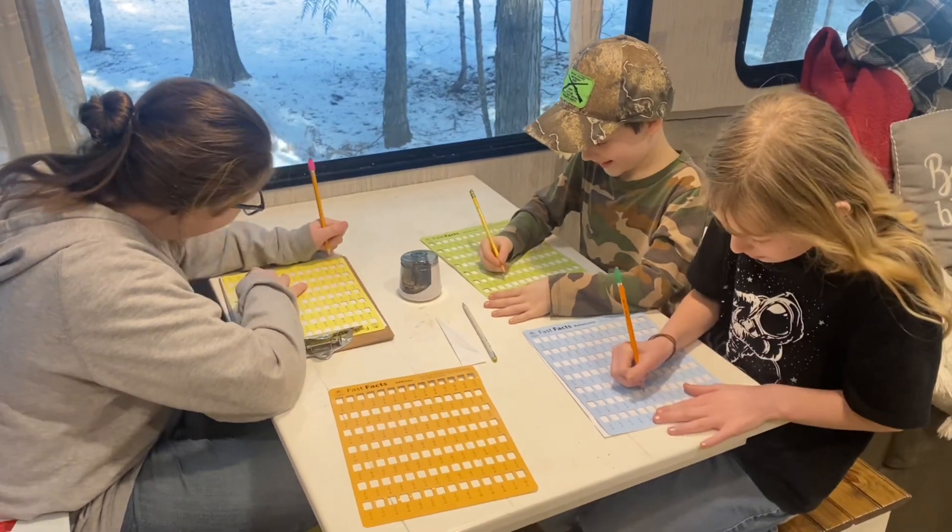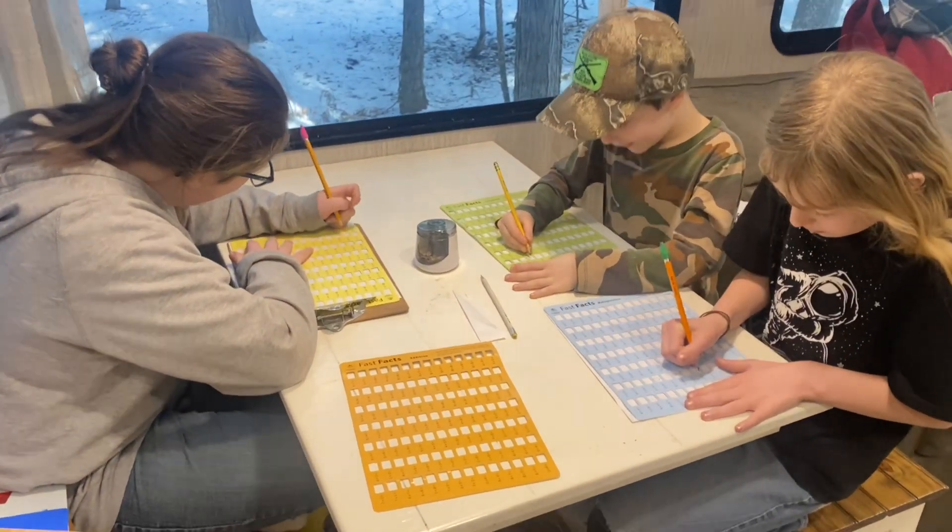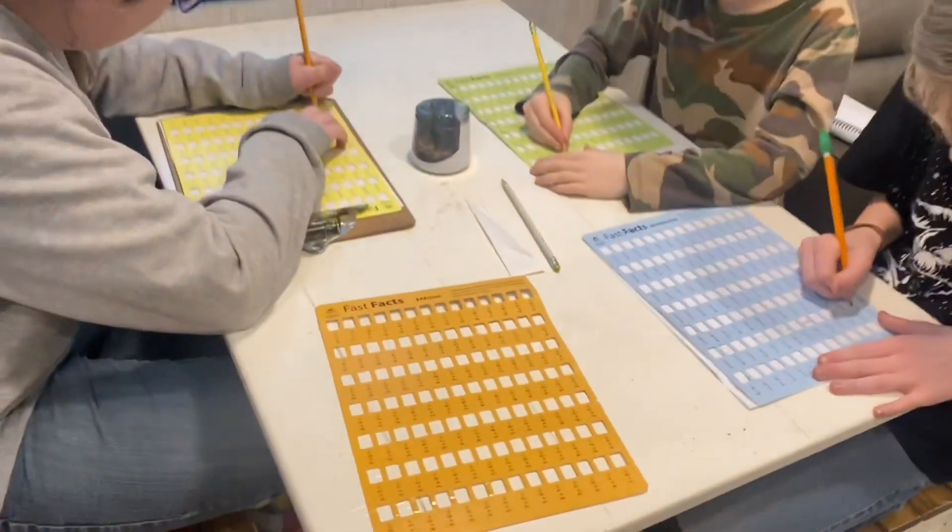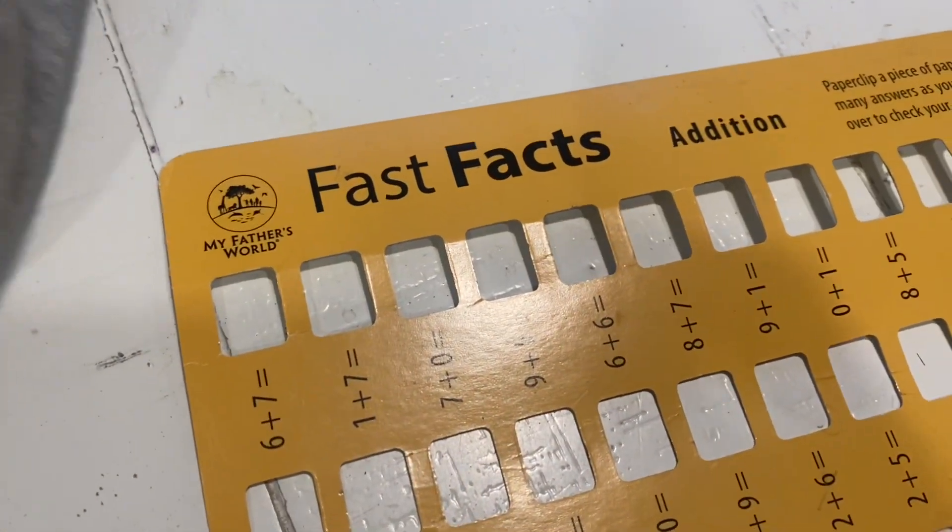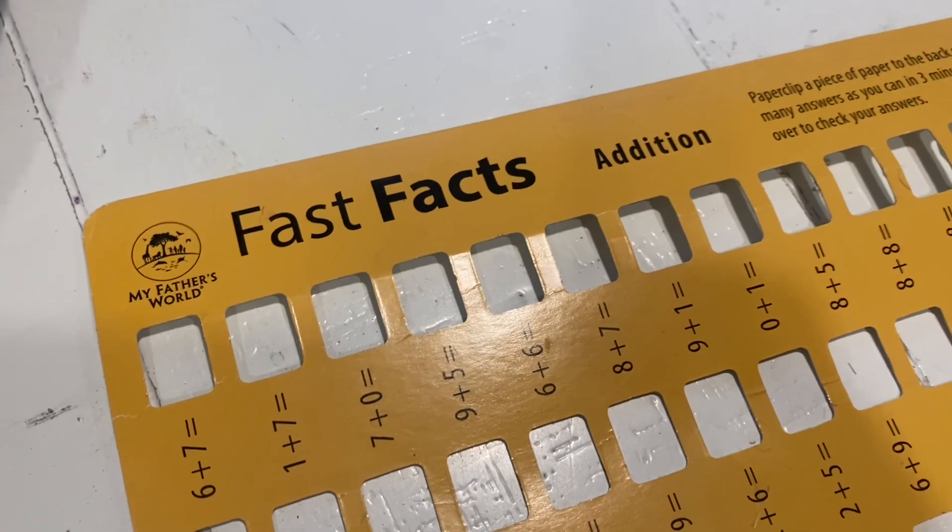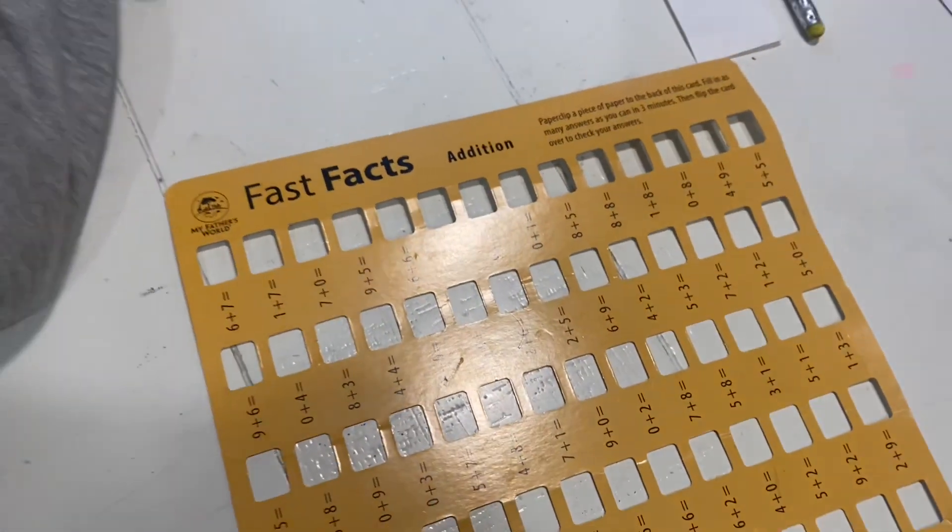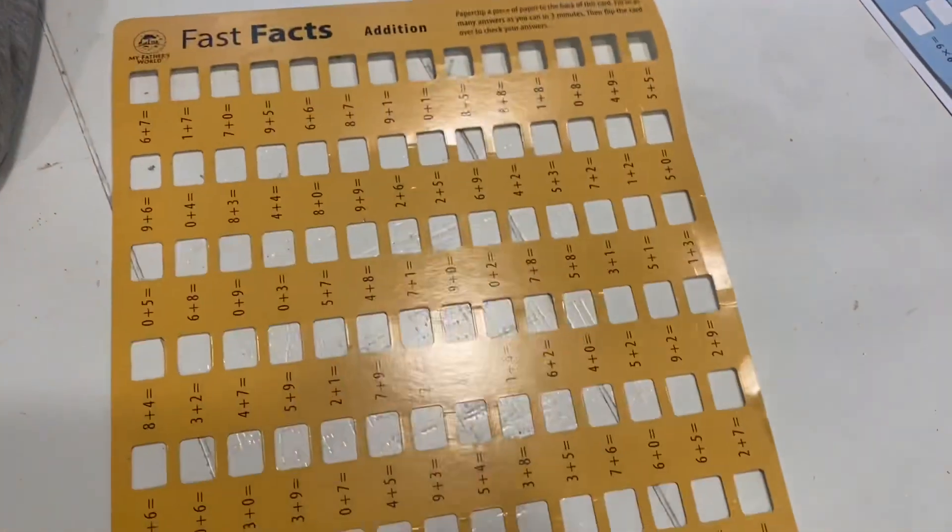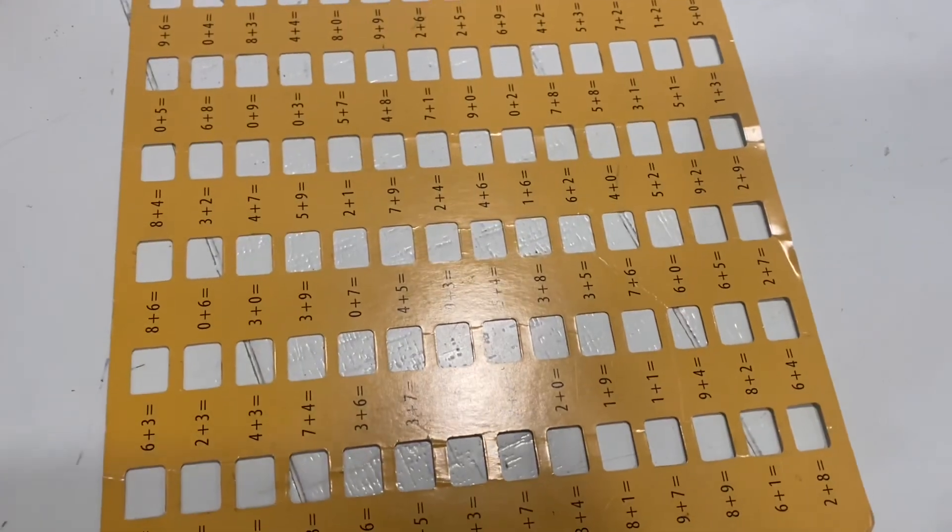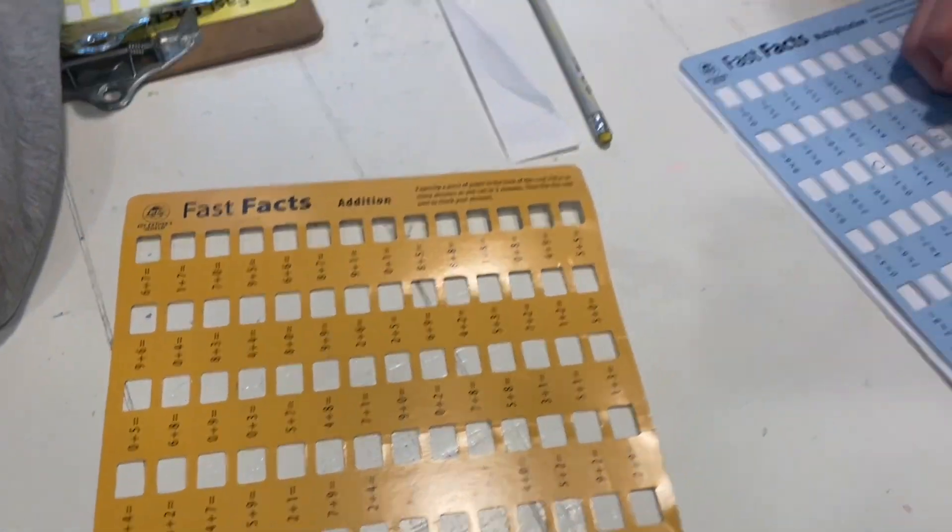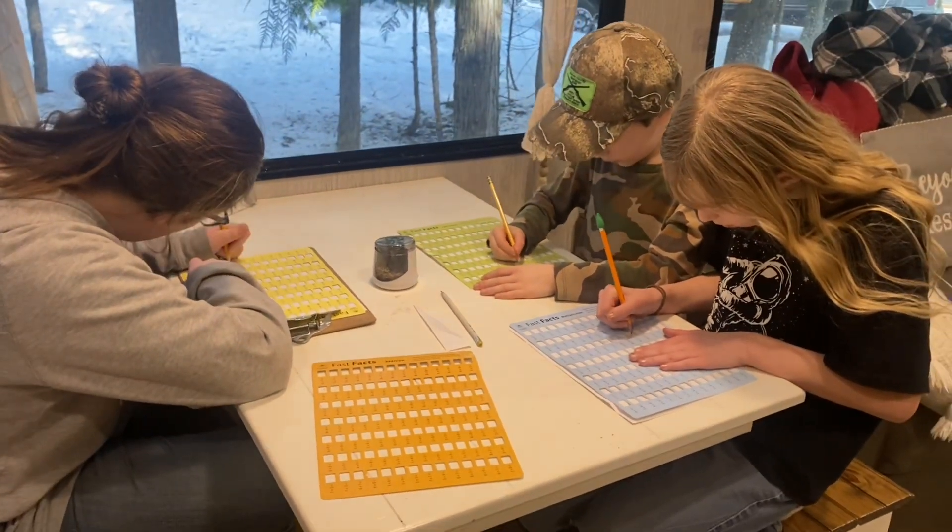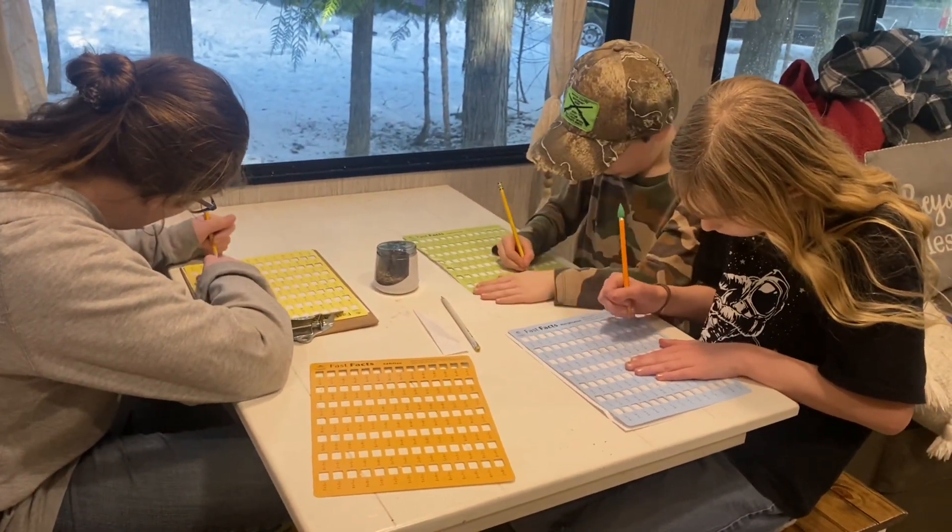Now this is a speed test. We actually got these when we were still doing My Father's World and I am so glad we did. I love these speed tests, these are called Fast Facts. They are these cards. There is one for each subject, or each level I guess, addition, subtraction, multiplication, division. Even if you're not using My Father's World you can buy these off of their website and I don't even think they're very much, I want to say $12 maybe $15 something like that. And they are totally worth it because we have used them for years.